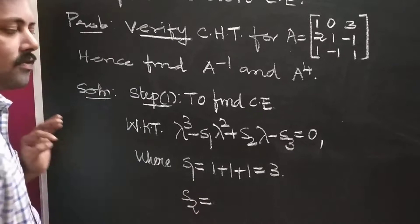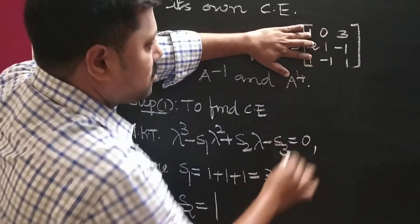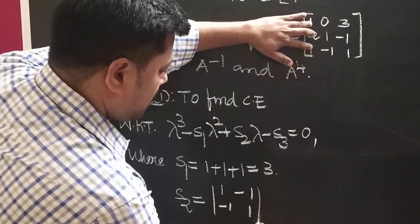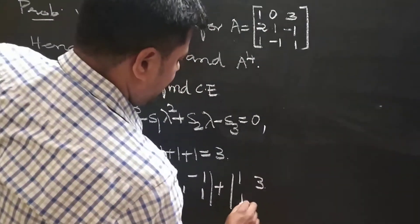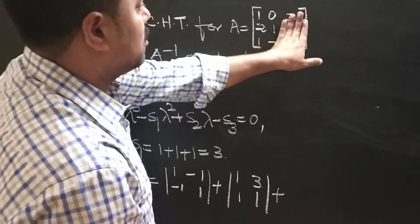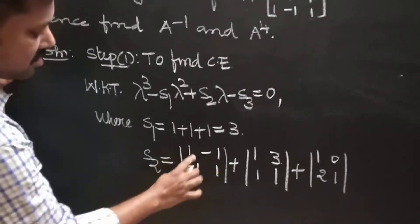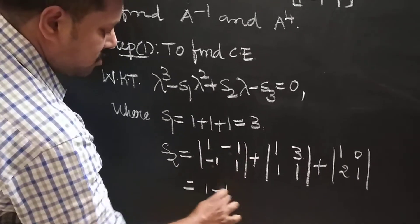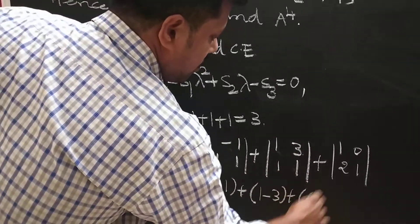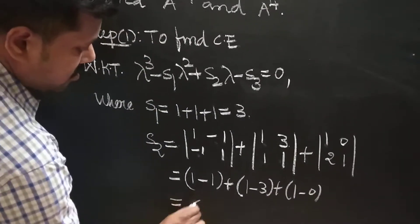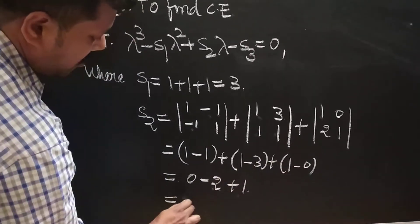S2 is the sum of the minors of the main diagonal elements. The minor of the first diagonal element (1) is obtained by leaving the first row and first column, giving the 2×2 matrix: 1, minus 1; minus 1, 1. The minor of the second diagonal element gives: 1, 3; 1, 1. The minor of the third gives: 1, 0; 2, 1. Computing determinants: (1×1 − (−1)(−1)) + (1×1 − 1×3) + (1×1 − 0×2) = 0 + (−2) + 1 = minus 1. So S2 equals minus 1.